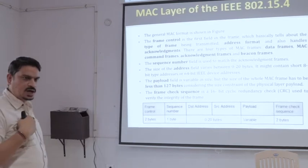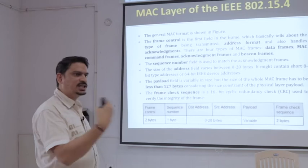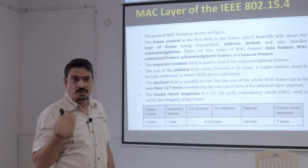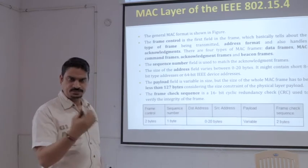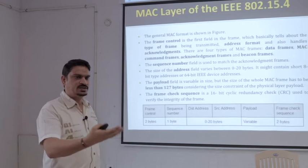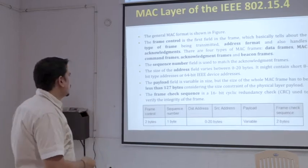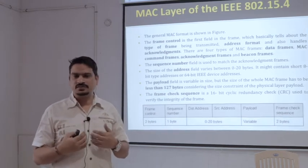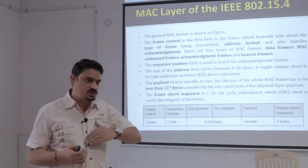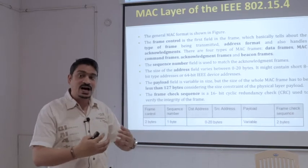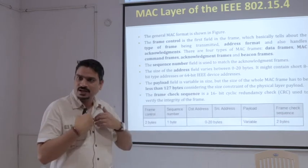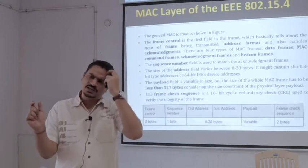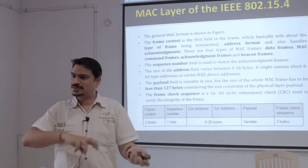The MAC frames may be of four types. First, data frames — if we are sending data, we tell the receiver that we are sending data. Second, MAC command frames — that is not data, it is a command or control signal, so we tell the receiver we are sending a control signal. Third, acknowledgement frames — whenever a receiver receives data it has to send an acknowledgement, telling that the signal it is sending is of acknowledgement type, not data type. Fourth, beacon frames — a small signal just telling us whether a receiver or sender is alive.